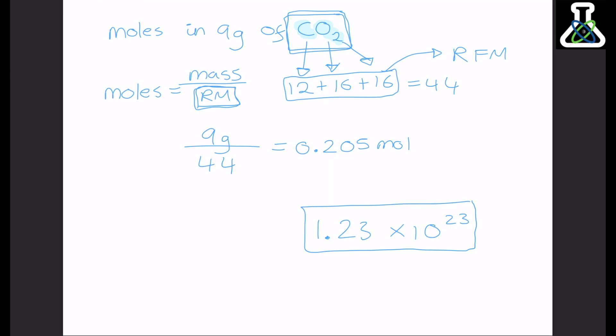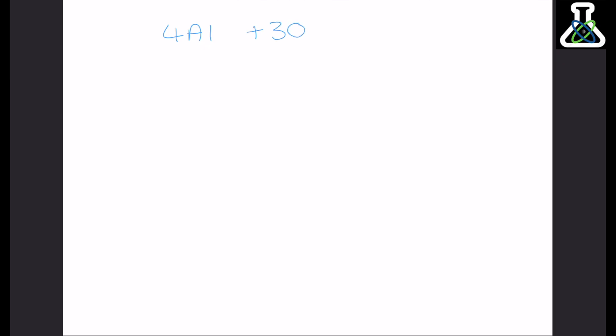In this example the particles are whole molecules of carbon dioxide — not the individual carbon or oxygen atoms. Moles become really useful when we use them in equations. For example: aluminium + oxygen → aluminium oxide. The big numbers used to balance the equation work as a mole ratio. So we're reacting 4 moles of aluminium with 3 moles of oxygen to make 2 moles of aluminium oxide — a 4:3:2 ratio. This means if we have information about one substance, we can use the ratio to find information about another.